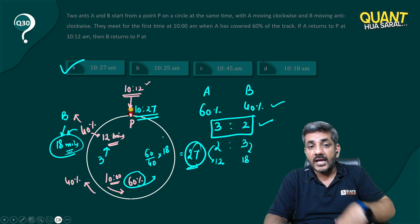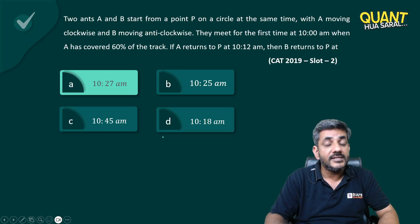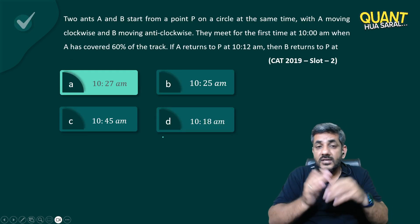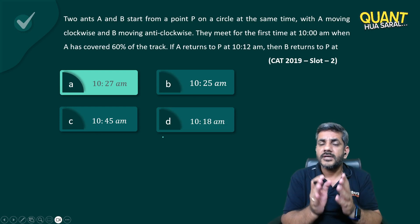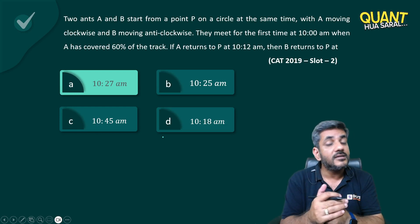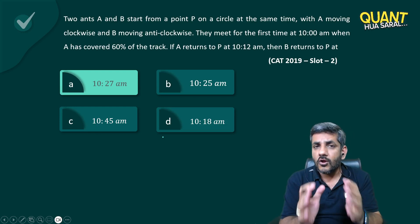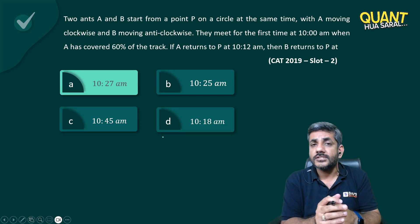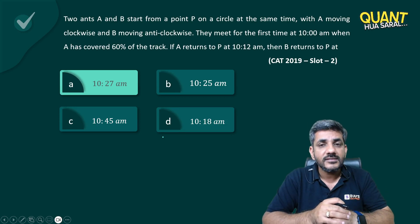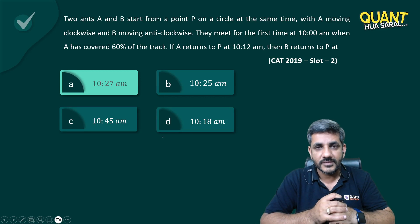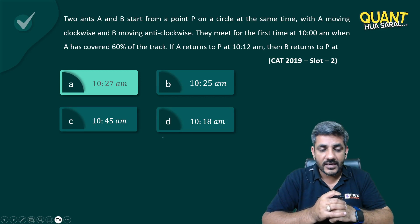By that logic, I get the answer as option A, which is 10:27. It's an aptitude way of solving the equation, but yes, it requires a good understanding of circular races along with the proportionality concept. I'm sure you could have done it real fast if you have a good understanding of that. Okay, that's all guys.